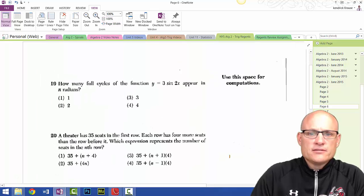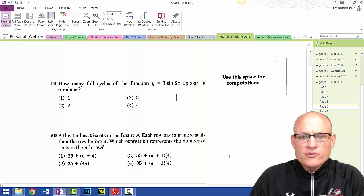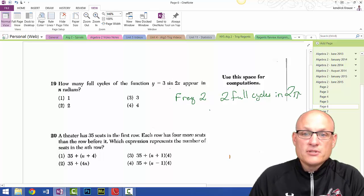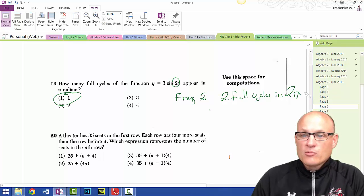Question 19: How many full cycles? So the frequency is 2. And what that means is 2 full cycles in 2 pi. So how much in 1 pi? Because this is the frequency right here. The answer is 1.